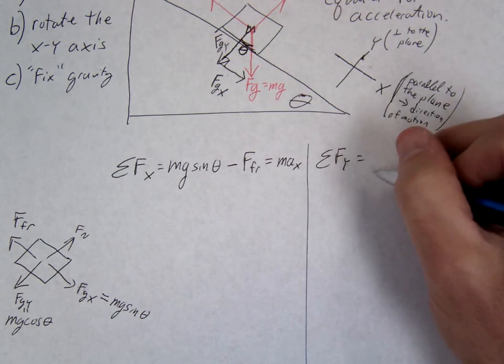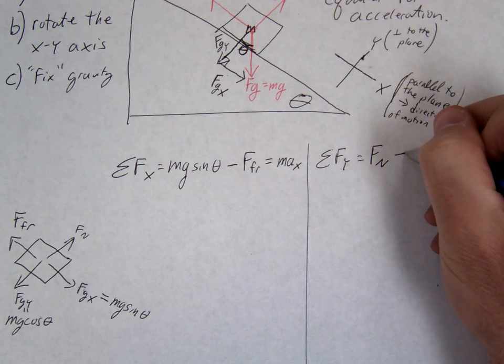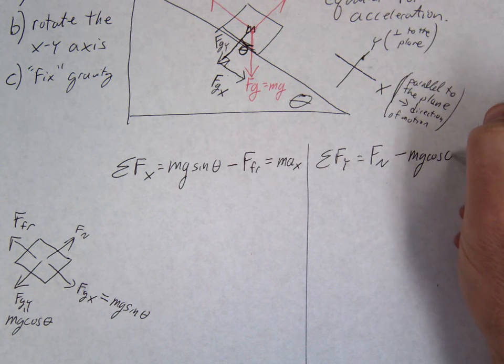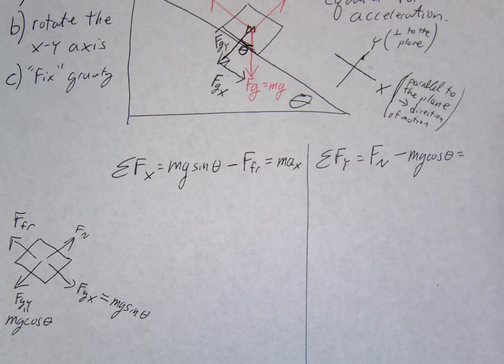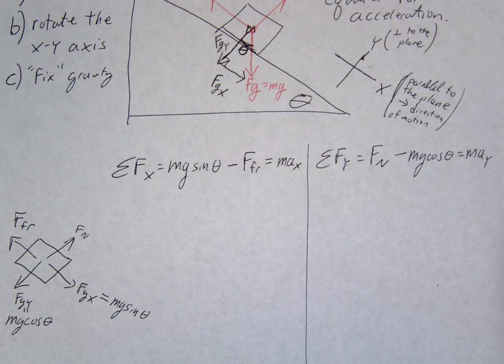On the Y side, we would write F normal minus M, G, cosine, equals M, A, Y. So there's our equation.